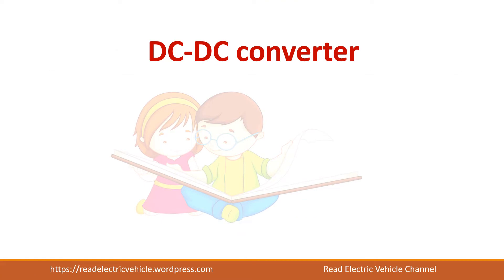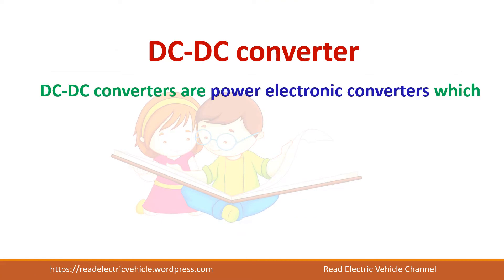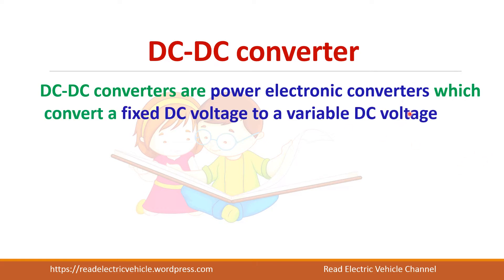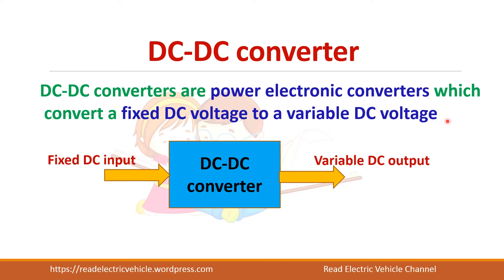What is a DC-DC converter? A DC-DC converter is a power electronic converter which converts a fixed DC voltage to a variable DC voltage. So if I give 100 volts, I can get 50 volts or 150 volts. By changing the configuration, I can get a variable DC output with a fixed DC input.